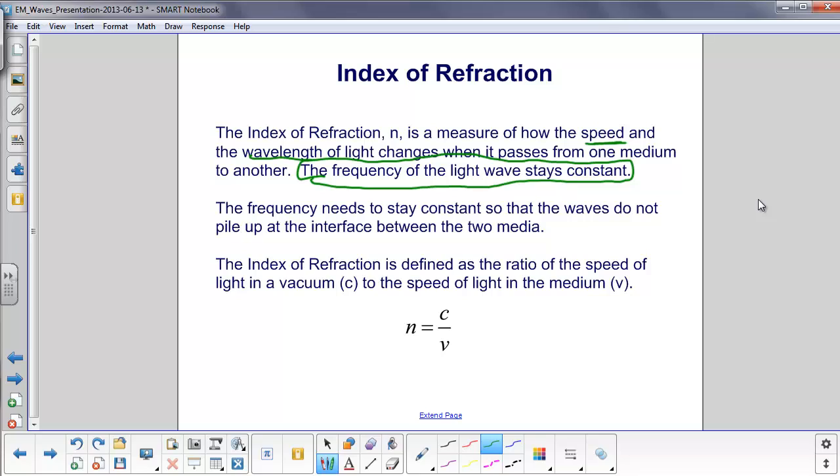So that has to stay constant because if it didn't, you would have all the waves piling up at the interface. For example, if the frequency was greater coming in into a certain medium, then it was less once it crossed it, then the waves wouldn't have anywhere to go, so they'd back up.